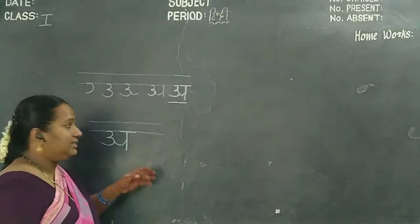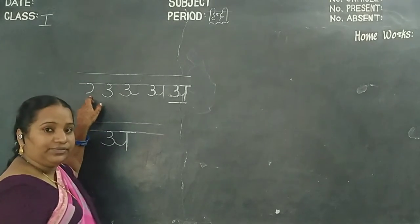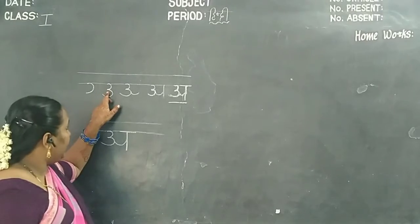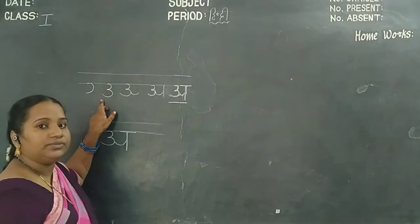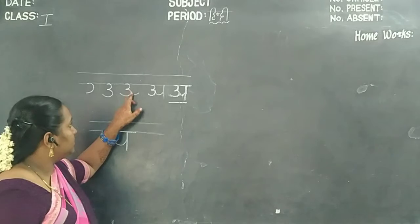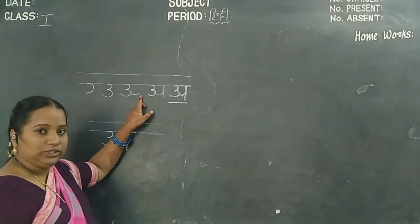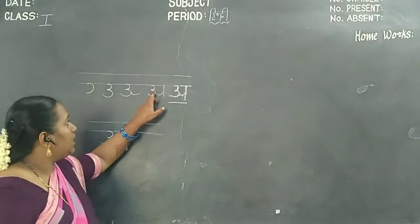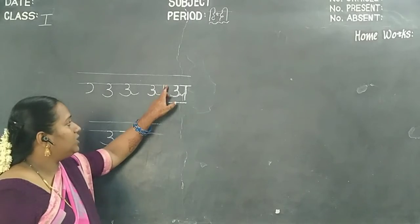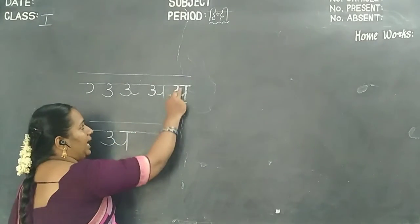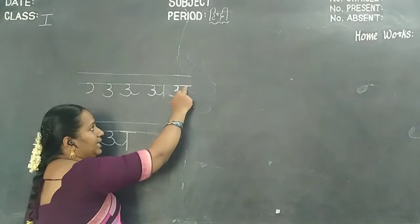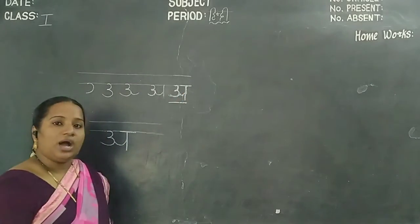This is the letter R. See once again. First step: right curve. Second step: right curve. Again, right curve. Third step: right curve, right curve, upward curve. Upward curve, standing line. Right curve, right curve, upward curve, standing line, sleeping line. This is the letter R.